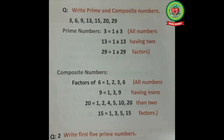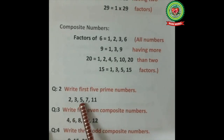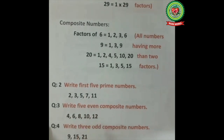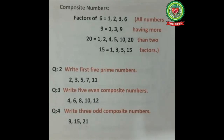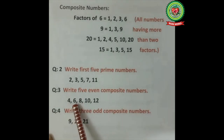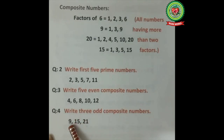Next examples: write the first 5 prime numbers — they are 2, 3, 5, 7, and 11. Write 5 even composite numbers — even means divisible by 2, so the even composite numbers are 4, 6, 8, 10, and 12. Write 3 odd composite numbers — odd means not divisible by 2, so the odd composite numbers are 9, 15, and 21.